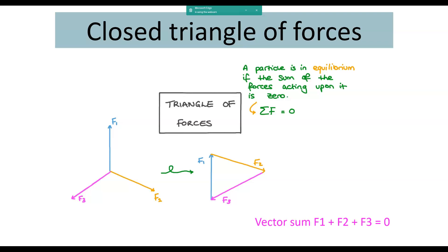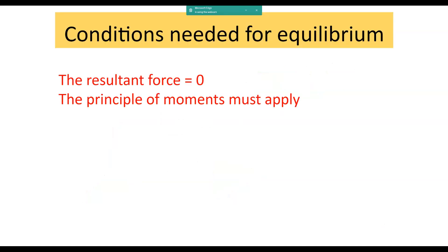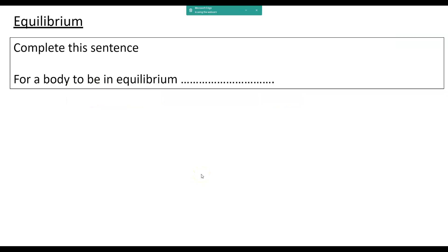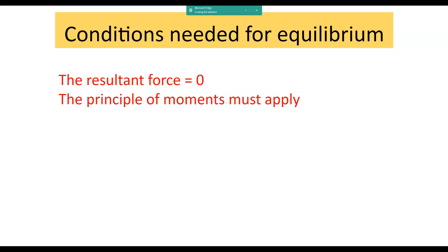We've also talked about this: if a particle or object is in equilibrium, the sum of the forces acting on it is zero. We can draw the triangle of forces by drawing one arrow on the end of the other — F1, then F2 at the end of F1, then F3 at the end of F2. The vector sums add up to zero, therefore it's in equilibrium. The conditions needed for equilibrium are that the resultant force is zero, and the principle of moments must apply — that is, the sum of clockwise moments equals the sum of anticlockwise moments.